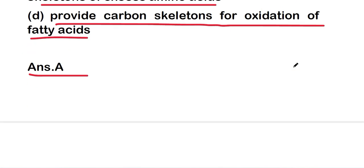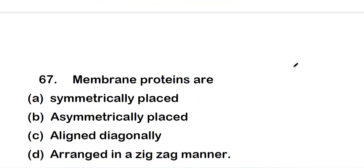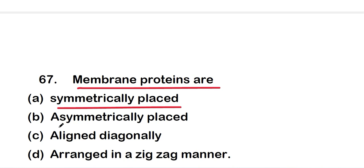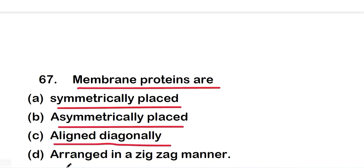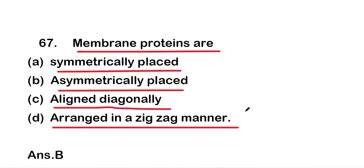Next question: membrane proteins are option A, symmetrically placed; option B, asymmetrically placed; option C, aligned diagonally; or option D, arranged in a zigzag manner. The right answer is option B — membrane proteins are asymmetrically placed.